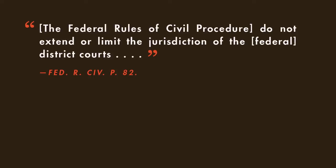Rule 82 expressly states that the federal rules of civil procedure, including the joinder rules, do not extend or limit the jurisdiction of the federal district courts. This means that any time you're dealing with cases involving multiple claims or multiple parties, it is not enough to simply analyze whether joinder is proper under the civil procedure rules. You must also analyze whether the court could properly exercise subject matter jurisdiction over each claim.